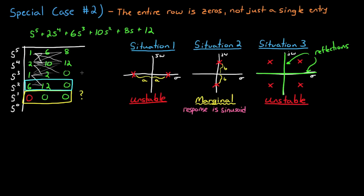Call the row directly above the row of 0's the auxiliary polynomial. Well, technically these are the coefficients of the auxiliary polynomial. To find the powers of S that go along with them, begin with the power of S that starts the row, and then skip every other power until you reach the end of the row.